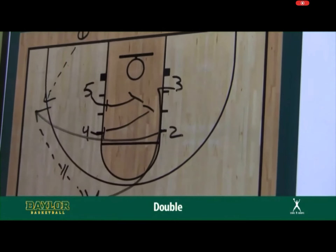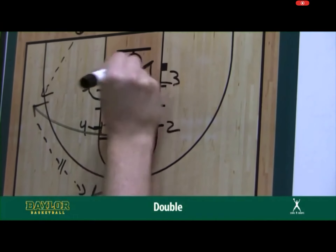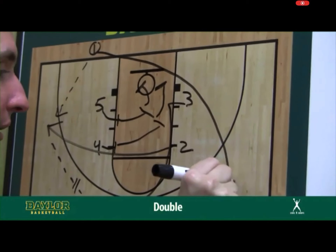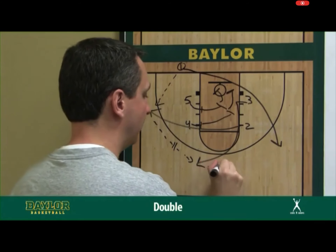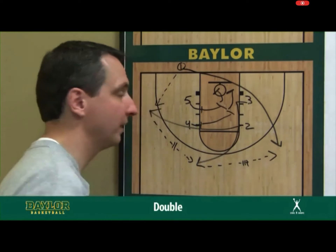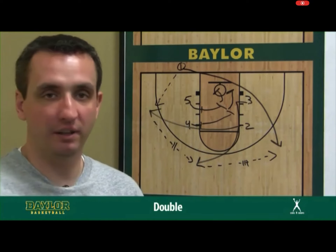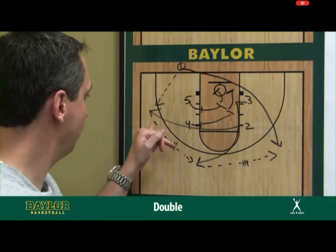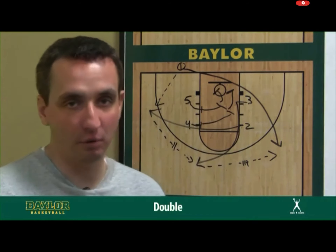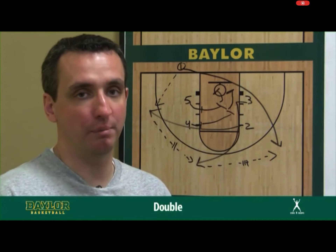Our third and final option is always for the inbounder: bringing the one off a double from the five and the four to the opposite wing, with the three reversing it to the one. In 'Double,' we're just looking to run the two, three, and the one off a series of doubles. The two is the first option, the three is second, and obviously your inbounder is always dangerous coming off doubles or any type of screens whenever you can free up your inbounder.